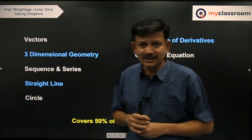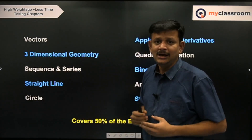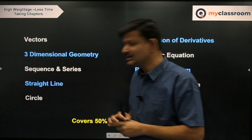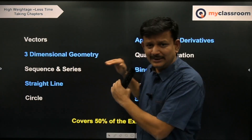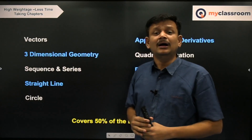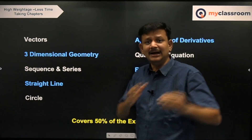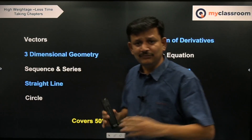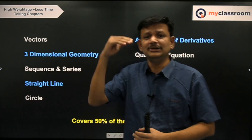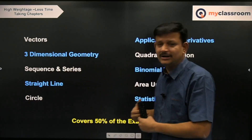Straight lines — it looks like it has plenty of formulae, but it also has plenty of varieties of questions. Stick to archives: whatever basic questions are being asked in JEE Main, just solve them and recap all the formulae. You will have a strong hold because you have been using them across all chapters of coordinate geometry.